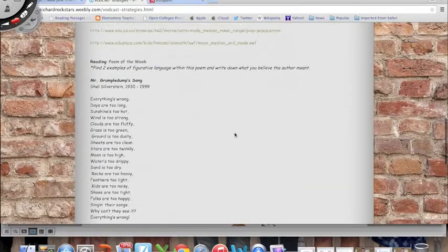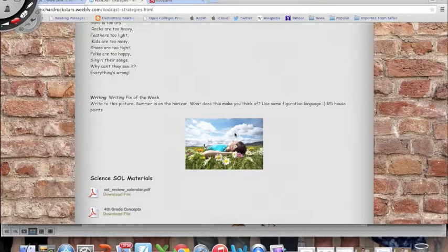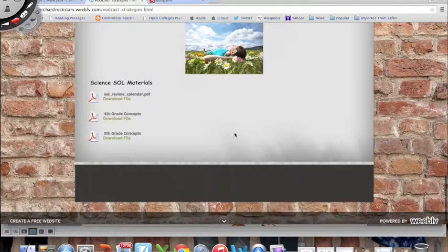Let me show you the other areas that I have for you this week. First of all, the Writing Fix of the Week. This weekend I finally felt like spring is here and summer is approaching. I could not believe the small amount of time we have left together, Rock Stars. I found this picture and I just want you to write down what does this make you think of? What emotions does it bring on? Personally for me when I was a kid and your age we would just lay out in the yard and look up at those big old cumulus clouds and make shapes out of them, which was a lot of fun. Write to this picture, use some figurative language. Hashtag five house points if you bring it in for me.